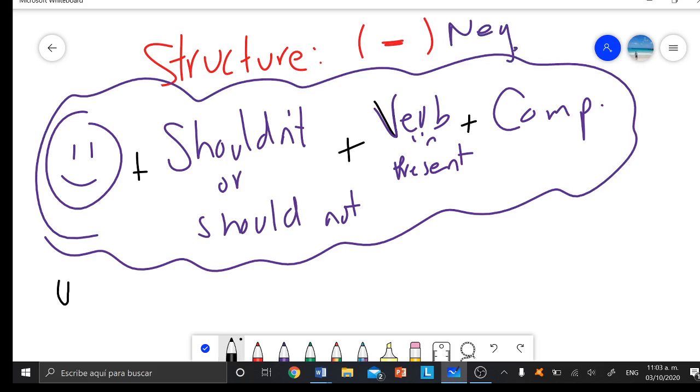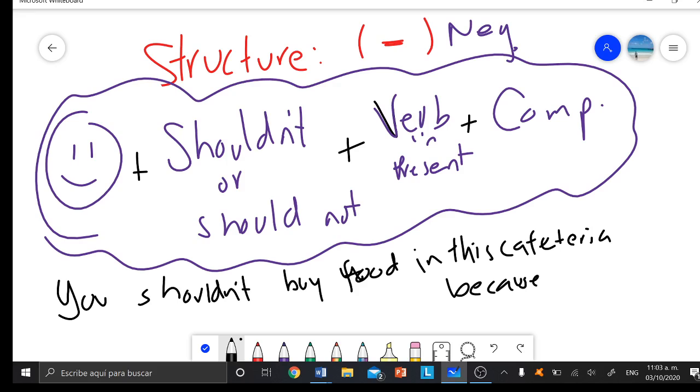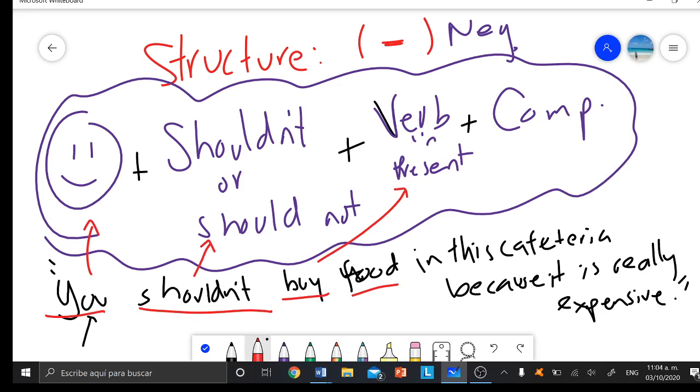An example will be like this: You shouldn't buy food in this cafeteria because it is really expensive. I'm just expressing my opinion. You shouldn't buy food in this cafeteria because it is really expensive. Tú no deberías, buy, comprar comida in this cafeteria, en esta cafetería, because it's really expensive, porque es muy caro. Probably you're gonna spend a lot of money. It's just my recommendation not to. Mi recomendación de que no lo hagas.